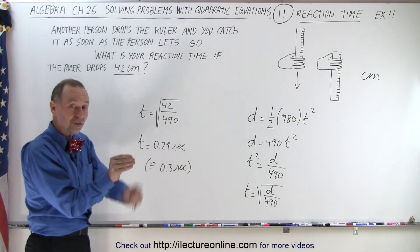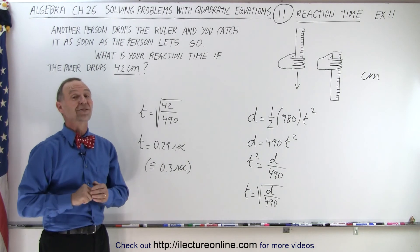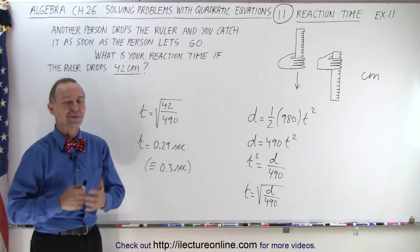So reaction time is about 3 tenths of a second. So you stand there. As soon as it drops, you grab it. See how far the ruler drops. And that will then measure your reaction time. And that is how it's done.